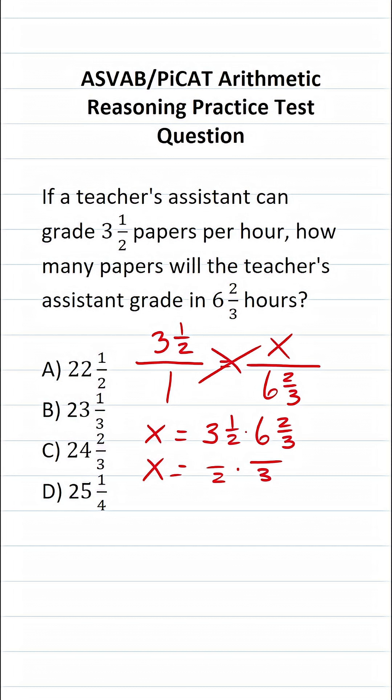To do that, we're going to do three times two, which is six, plus one, which is seven. So three and a half is the same thing as seven over two. Let's do the same thing to find the numerator here. Six times three is 18, plus two is 20. So six and two thirds is the same thing as 20 over three.